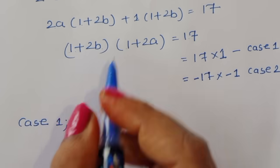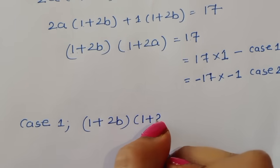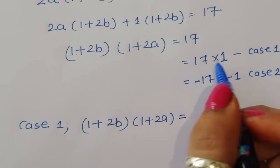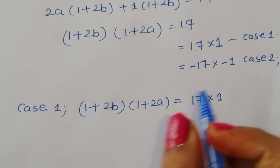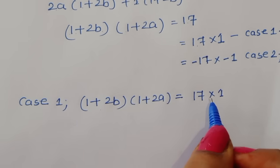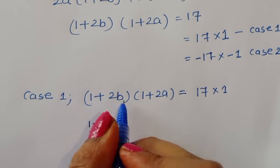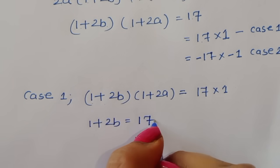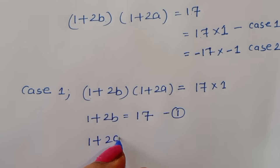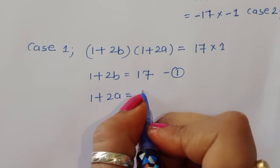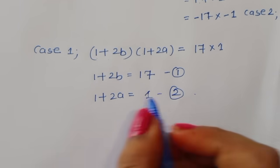In Case 1, (1 + 2b)(1 + 2a) = 17 × 1. Comparing left-hand side and right-hand side, we get two equations: equation 1 is 1 + 2b = 17, and equation 2 is 1 + 2a = 1.